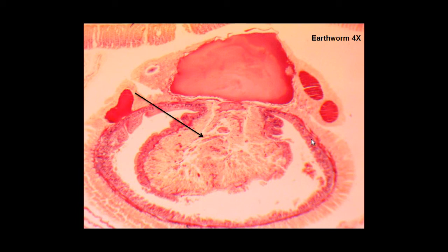Now we're going to look at this structure inside of the intestine called the typhlosole. Its sole purpose is to increase the surface area inside of the intestine to increase the absorption of nutrients. The last thing we're going to look at is the intestine, which is a complete digestive tract.